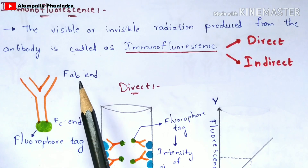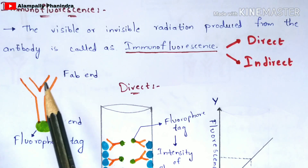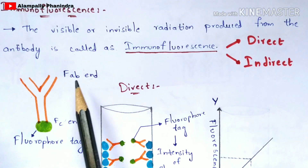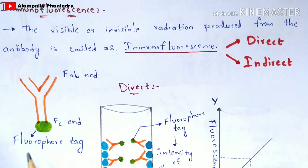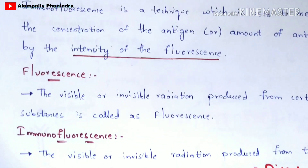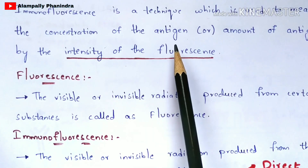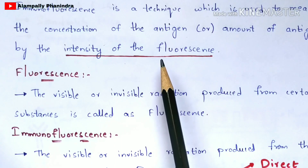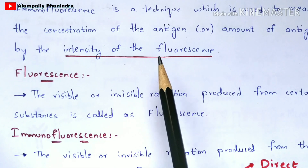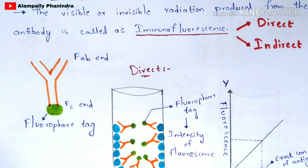The FAB is the antigen binding site where the antigen will get bound, hence it is called FAB. At the FC end, what you are going to do is add the fluorophore tag. You add the fluorophore tag to produce the intensity of the fluorescence — which is how the concentration of the antigen can be determined.